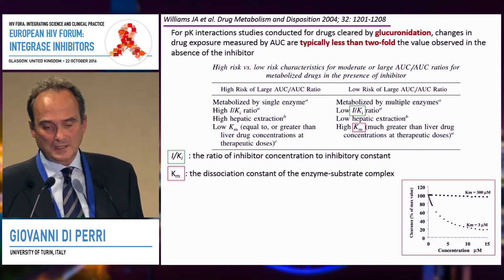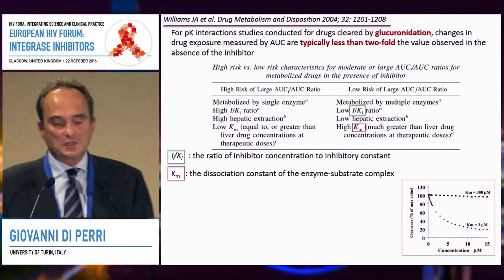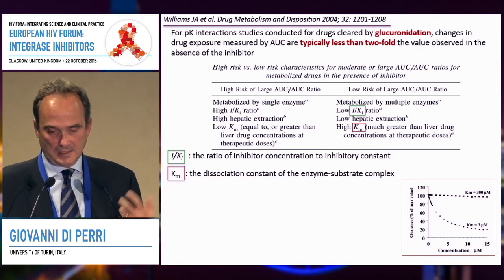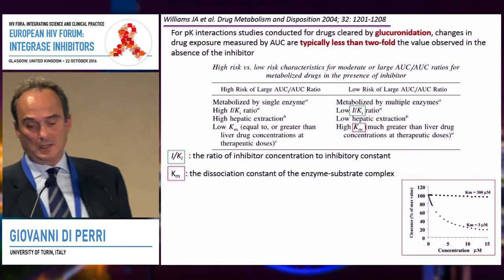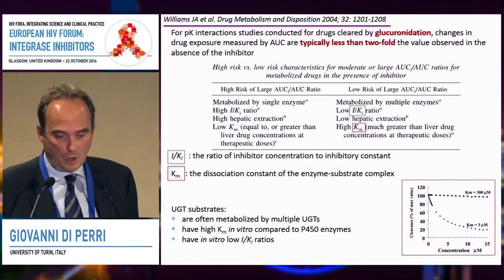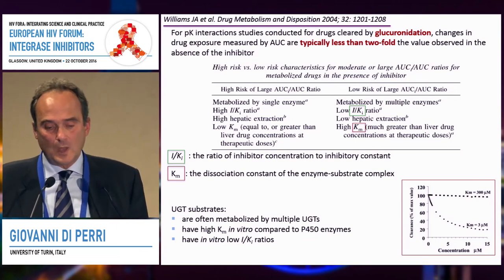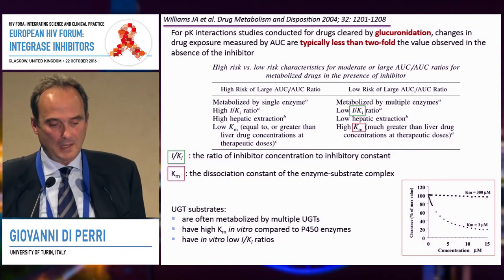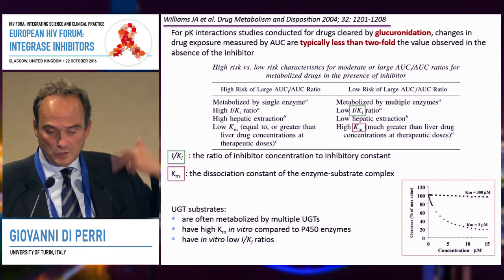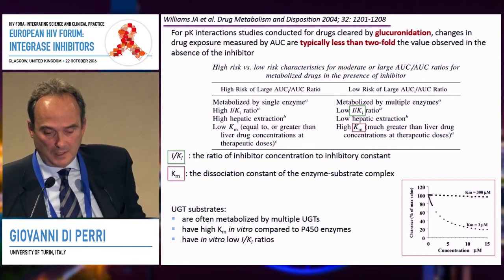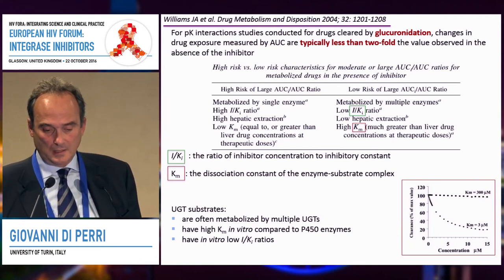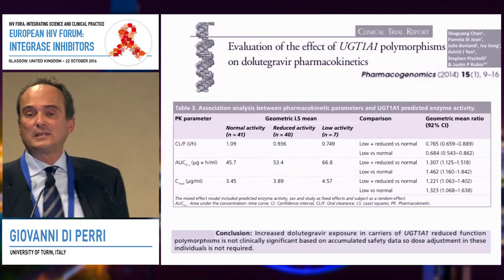There are pharmacological reasons for this. The dissociation constant — a measure of tightness of drug-receptor binding — tends to be higher for glucuronidation substrates. This means the effects in terms of change in PK exposure will not be as important compared to other examples we are accustomed to. UGT substrates are often metabolized by multiple UGTs, which reduces the likelihood of a significant drug-drug interaction, and tend to have higher dissociation constants in vitro compared to P450 enzymes.